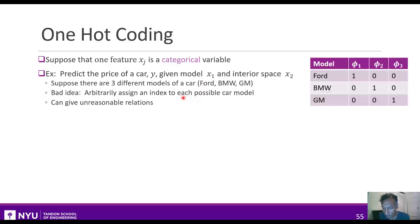A better way is to use what's called one-hot coding. So what you do is you add three binary features called phi1, phi2, and phi3, as shown here. So when the x1 is Ford, you set phi1 to be one. And when it's BMW, you set phi2 to be one. And when it's GM, you set phi3 to be one. And then all the other cases are zero. And now you write y as a linear combination of these transformed features.